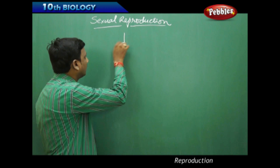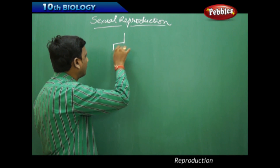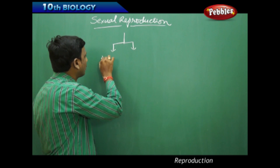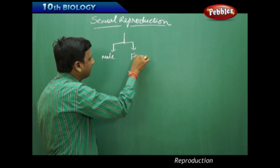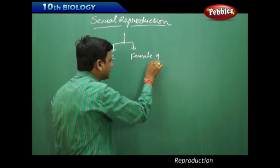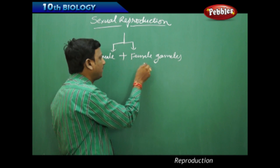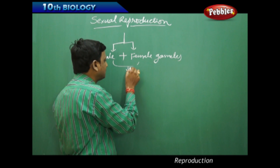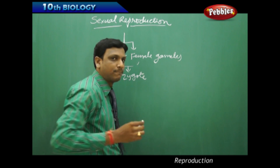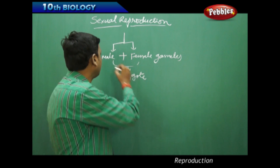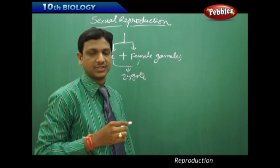Let us recall the process of sexual reproduction. It happens by the fusion of male and female gametes. Gametes are the reproductive cells. Male gamete plus female gamete gives rise to a zygote, and the process of fusion of male gamete and female gamete is called fertilization.